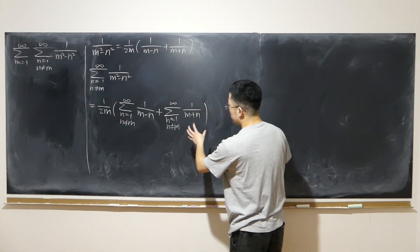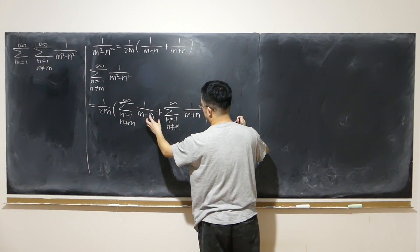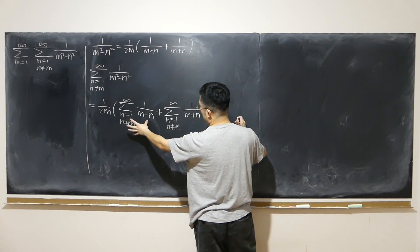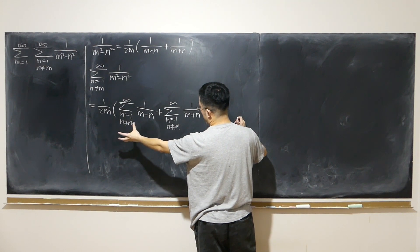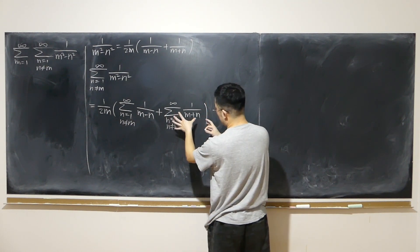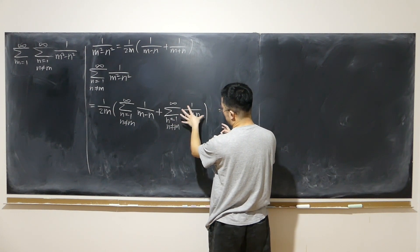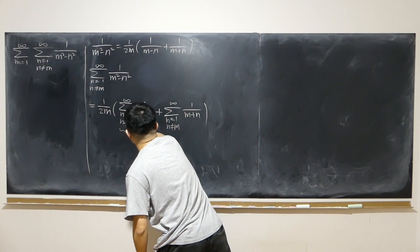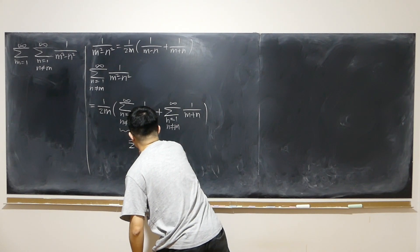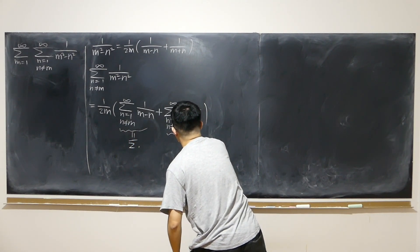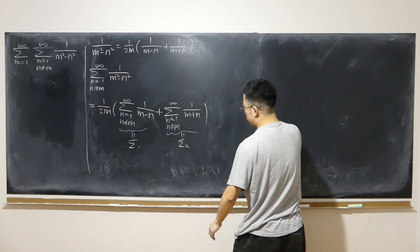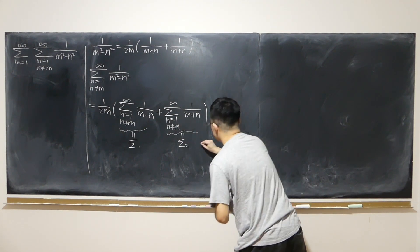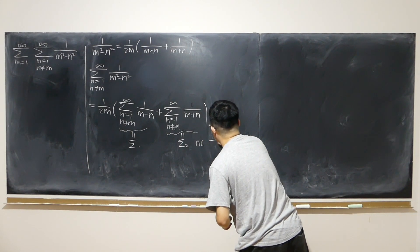My purpose is to somehow re-index the first sum to make it the same form as the second. Maybe I can pull out a few extra terms, isolate them, and there might be a negative sign so some terms cancel. At least the majority of the terms can be cancelled out. That is my overall plan. I'll denote the first sum as sigma 1 and the second as sigma 2.